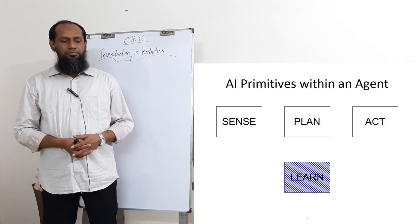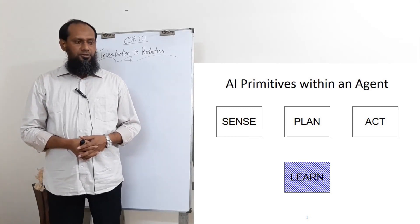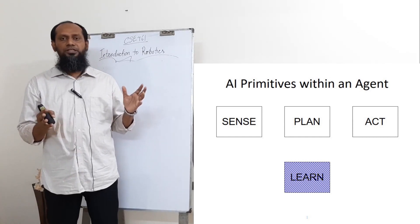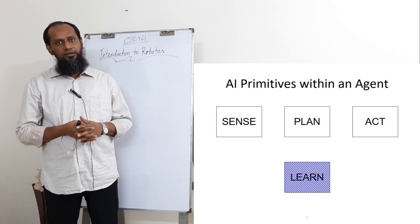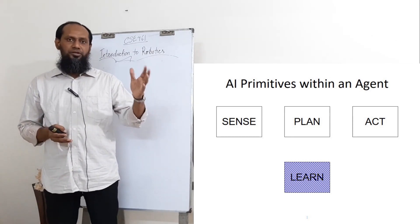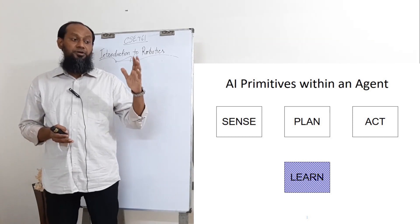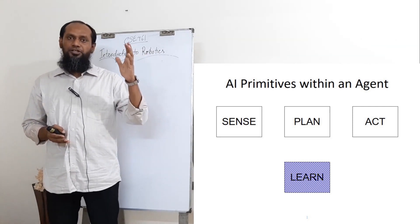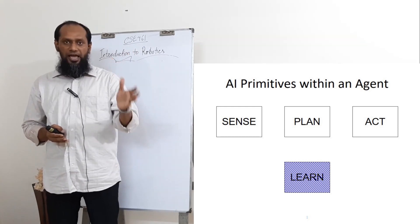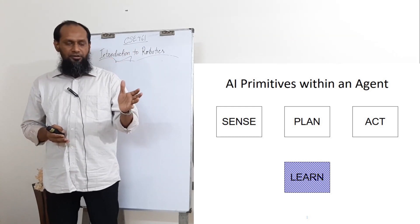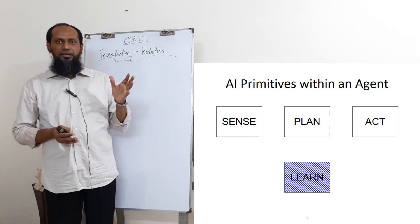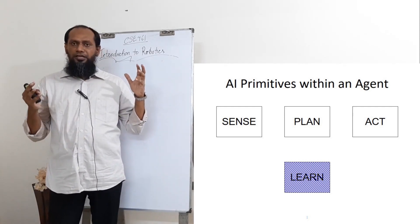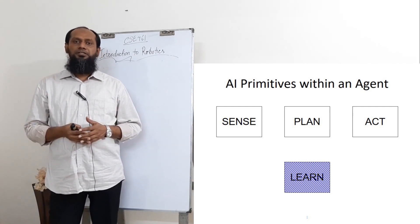Hello everyone, welcome back again. So now we would like to discuss about AI primitives within an agent. There are mainly three paradigms, three primitives: one is sense, one is plan, and then act. And for AI, without having any learning, we cannot call that system as AI.